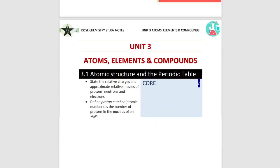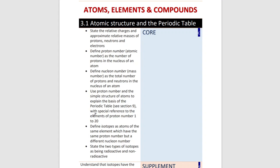Before we begin, let's have a look at everything we're going to be covering in today's video. I'm going to cover the core segment and the supplement segment. Core is for specific papers and supplement is a different type of paper. If you're doing supplement, you're doing paper two, paper four and paper five. But when you're doing core, you're doing paper one, paper three and paper six. The difference between core and supplement is just the difficulty level, and the maximum grade you can get in core is a C.